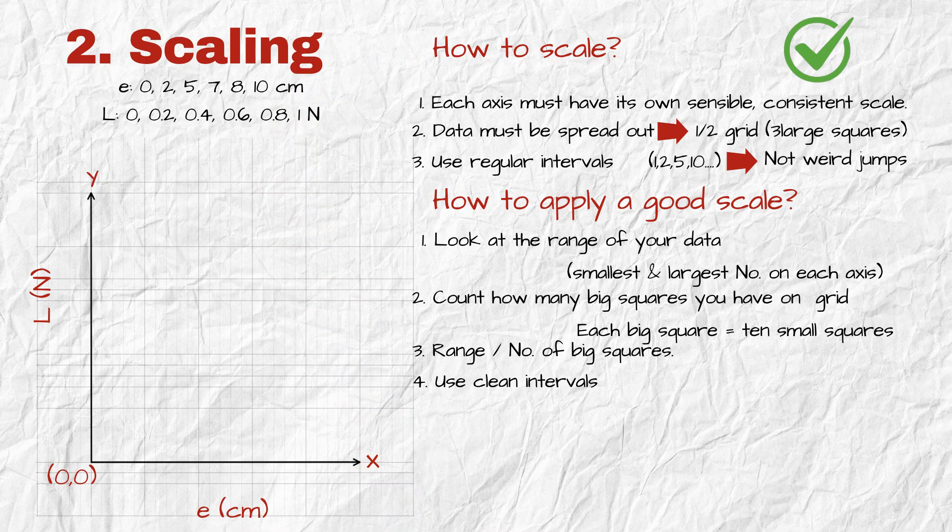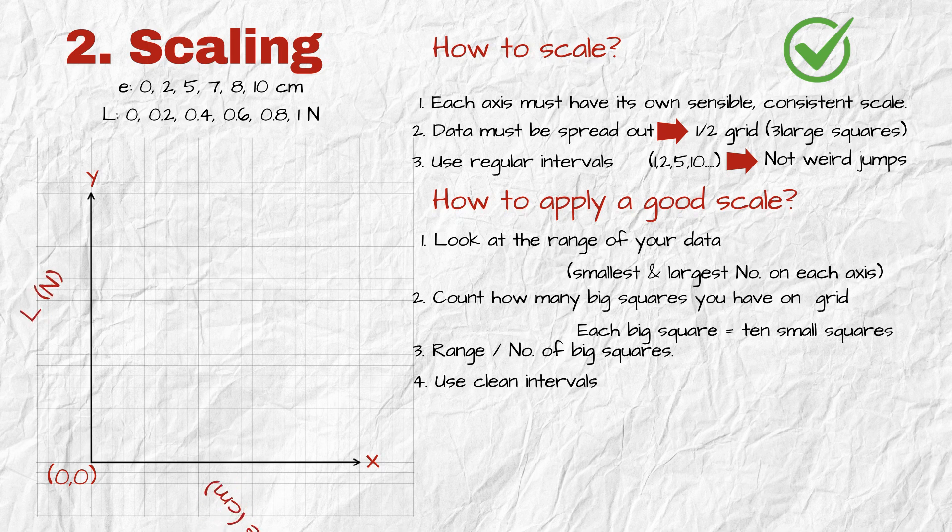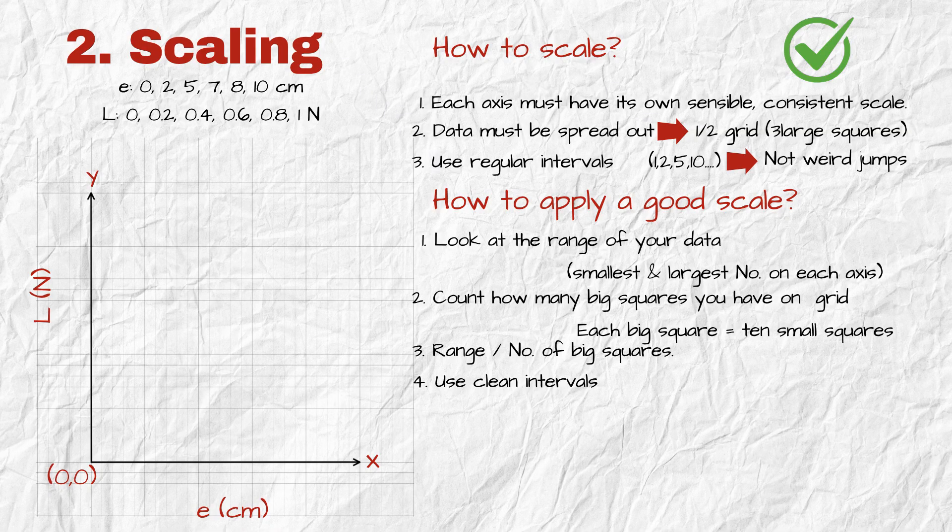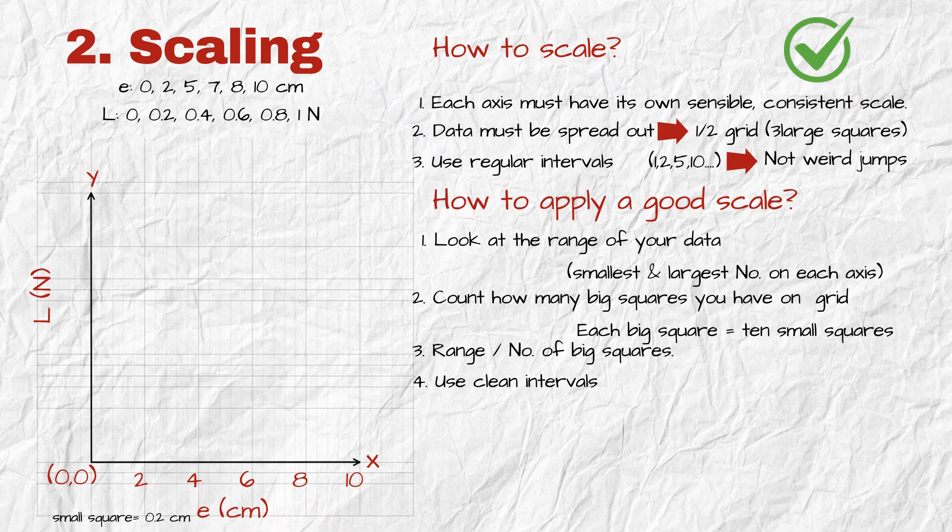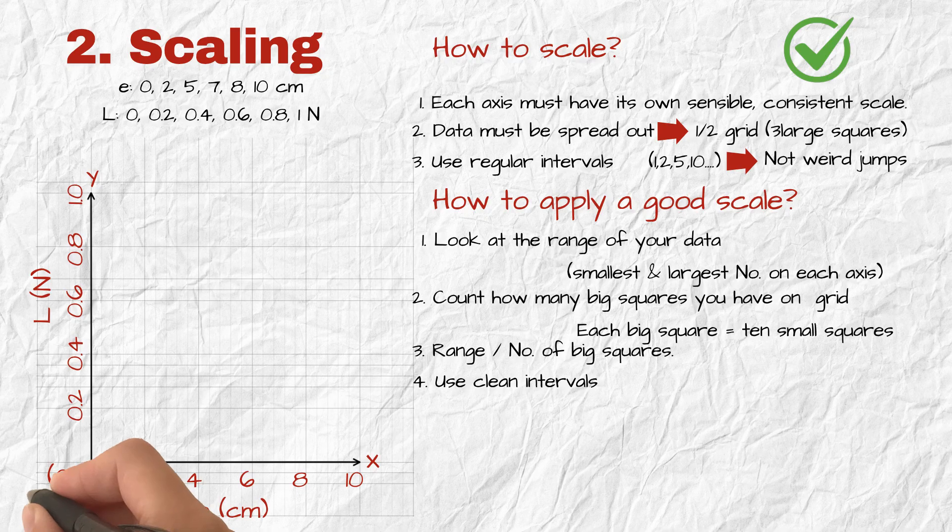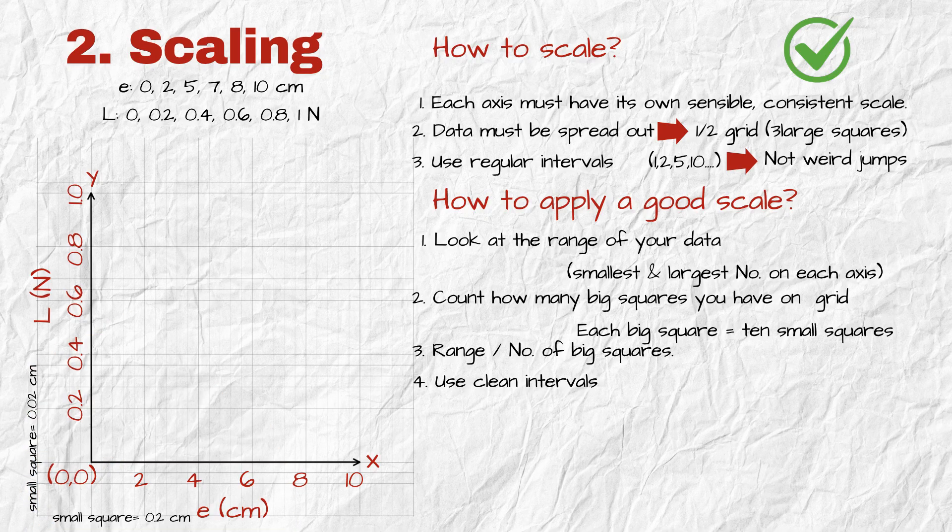Now, your x-axis is for extension in centimeters, and your y-axis is for load in newtons. That's already told to you in the question. Let's say the x-axis goes from zero to ten centimeters. You count how many big squares you have. For example, five big squares. So you can choose a clean scale. One big square equals two centimeters. That means one small square equals zero point two centimeters. Now on the y-axis, your load goes from zero to one newtons. Again, you have five big squares, so you pick one big square equals zero point two newtons, which means one small square equals zero point zero two newtons. Got it?